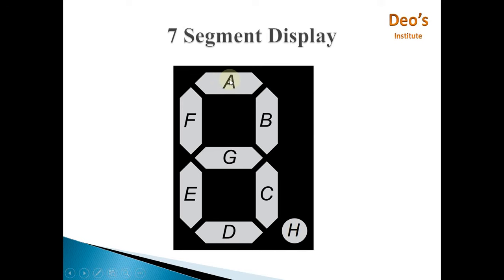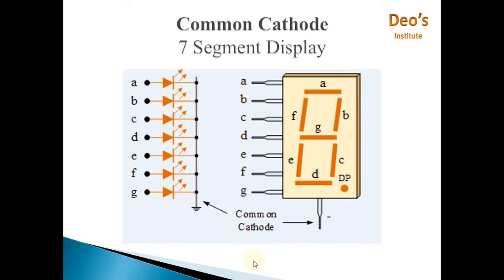Generally there are two types of 7 segment displays. First one is common cathode display in which all LEDs' negative terminals are connected to common, and this common terminal is connected to ground.